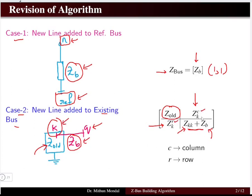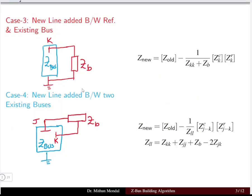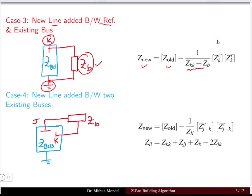Case 3: if a new line with impedance Zb is added between the reference bus and an existing bus k. In that case, the new impedance matrix equals the old impedance matrix minus one divided by (Zkk + Zb), multiplied by the product of the kth column and kth row elements of Z_old.